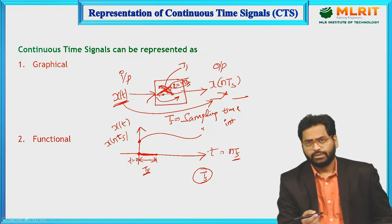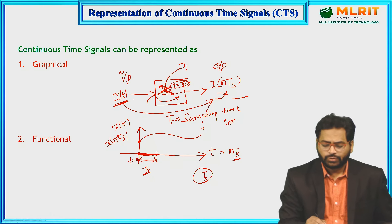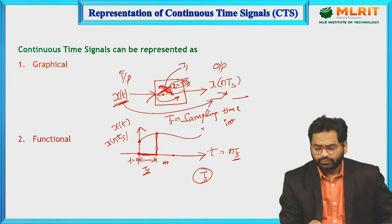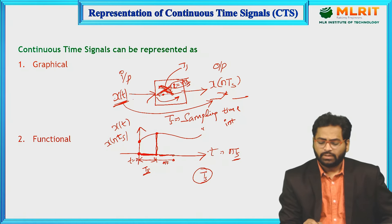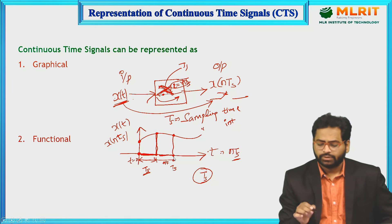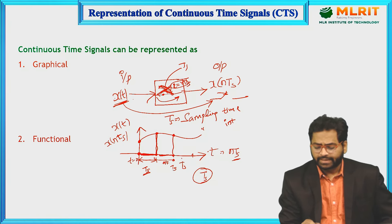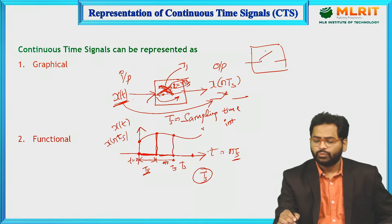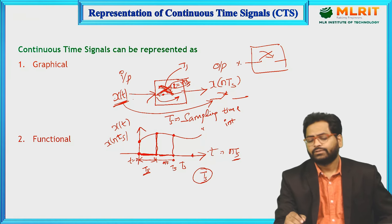Once Ts seconds is reached, again the switch is closed, and the corresponding output is this point. Again after Ts seconds the switch is off, and when the switch is off the output is 0. Then after another Ts seconds, you get the next point as output. For every Ts seconds the switch is closed, and the remaining time x(nTs) will be 0.